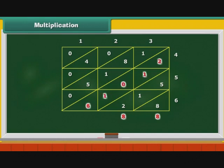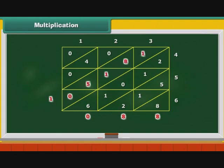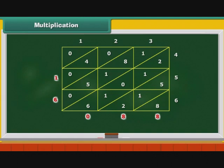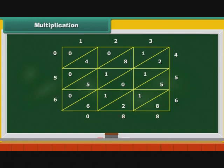The third diagonal has 5 elements: 2, 1, 0, 1, and 6. Their sum is 10 — write 0 and carry over 1 to the next diagonal. The next diagonal has 5 elements: 1, 8, 1, 5, and 0. Their sum is 16, including the carry over 1 — write 6 and carry over 1. The next diagonal has 3 elements: 0, 4, and 0. Their sum is 5, including the carry over 1 — write 5. The last diagonal has only one element: 0 — write 0. Read the digits from top to bottom: 0, 5, 6, 0, 8, 8. Therefore, the product of 123 and 456 is 56088.